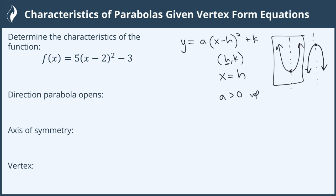If a is less than zero, it's going to open down like this one. So for our function right here, since a is 5 and 5 is greater than zero, 5 is positive, this parabola is going to open up.